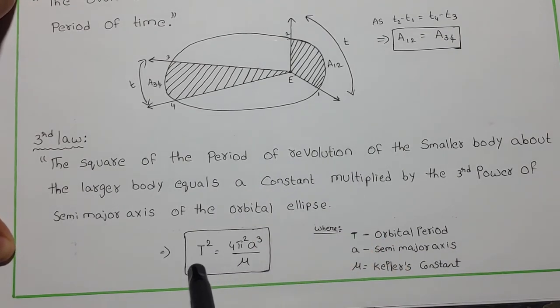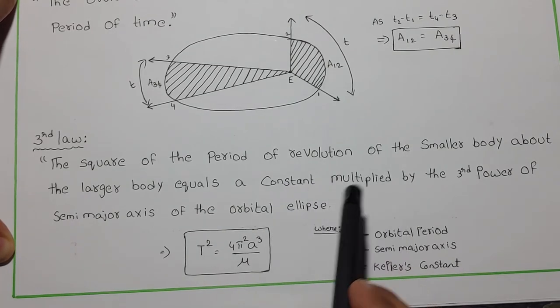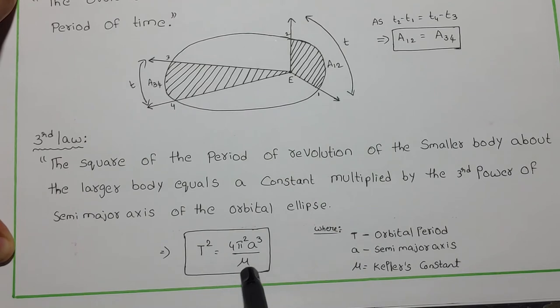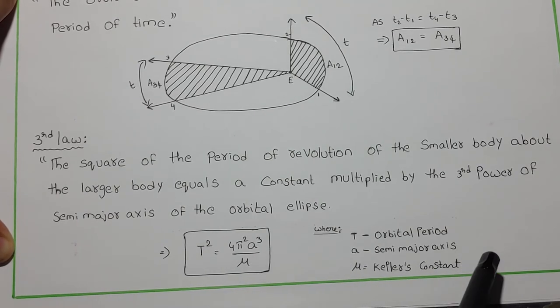That could be defined as T squared, that is period of revolution - square of the period of revolution, is equal to constant multiplied 4 pi squared by mu, where mu is a Kepler constant which is a constant value of 3.98 times 10 to the power of 5 km cubed per second squared, multiplied by third power of semi-major axis.